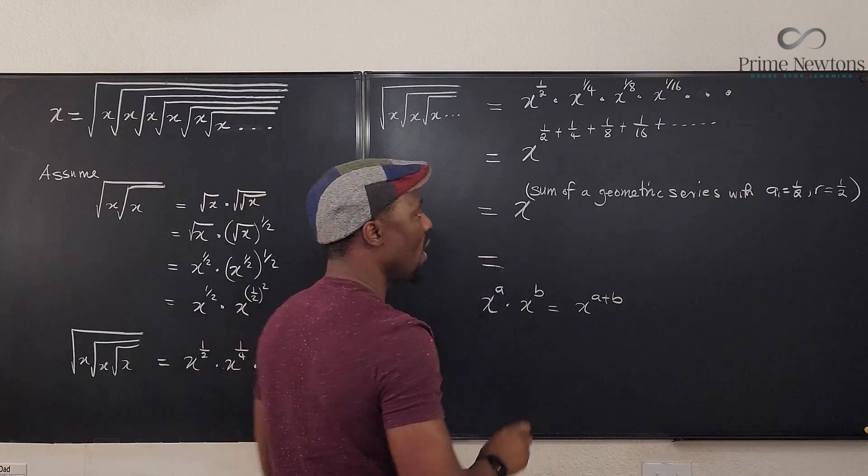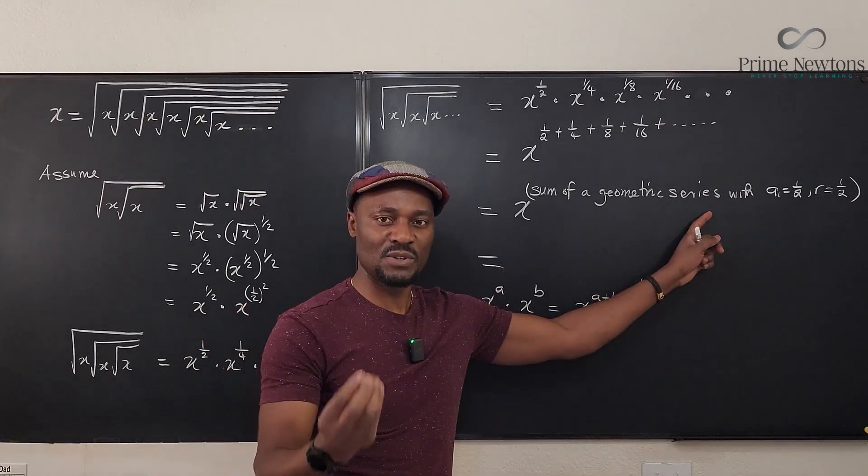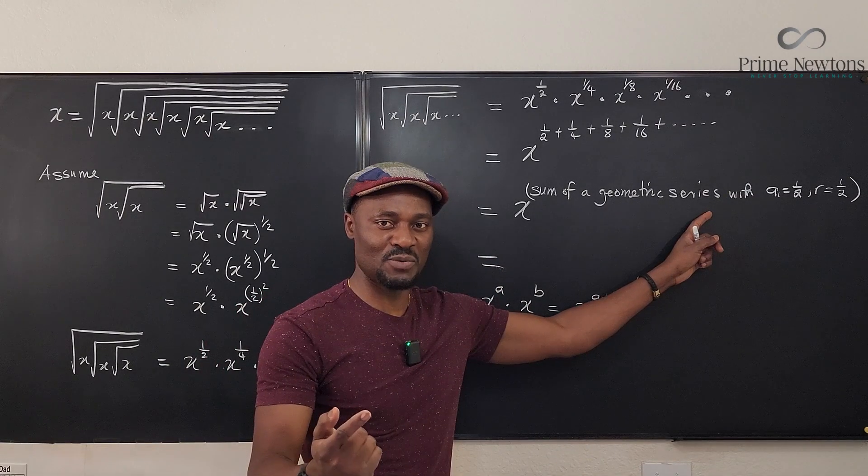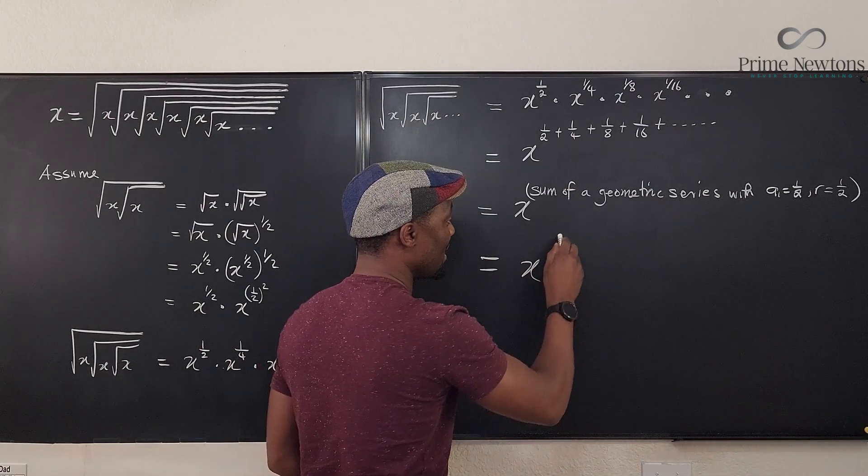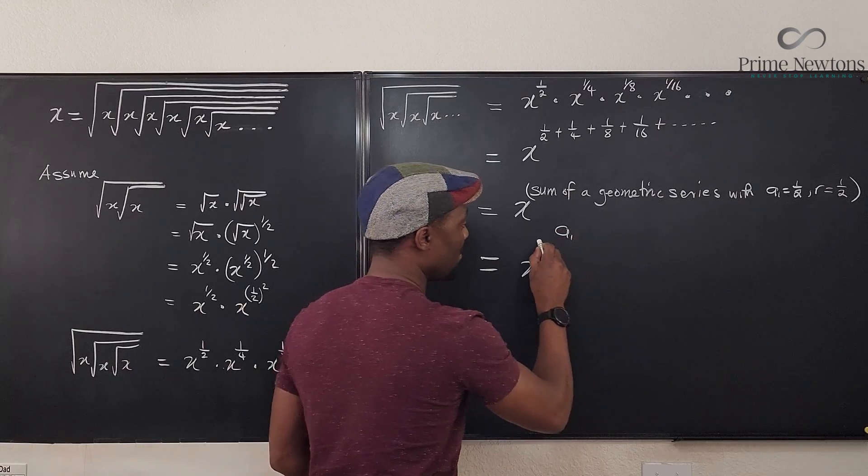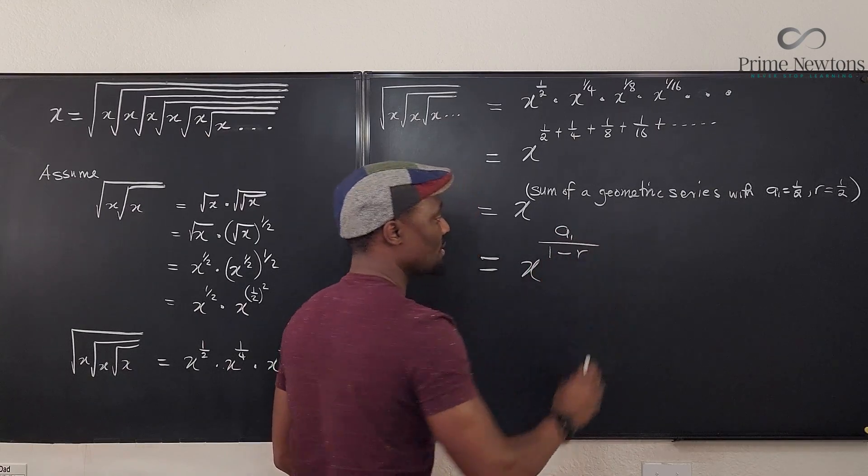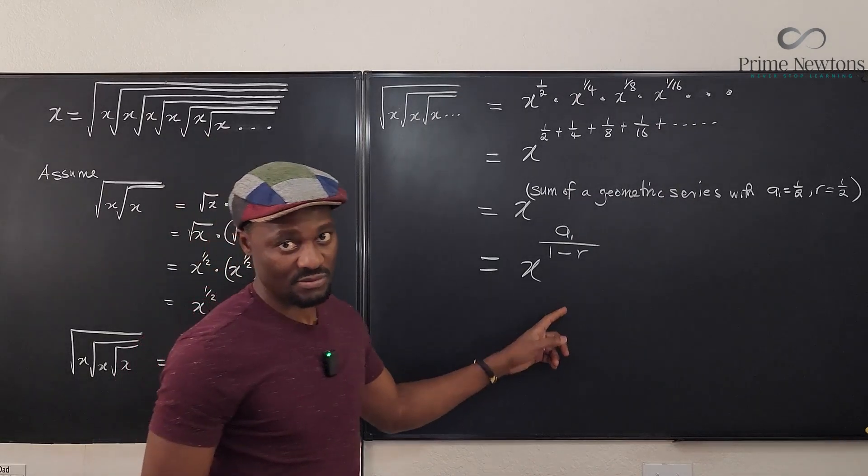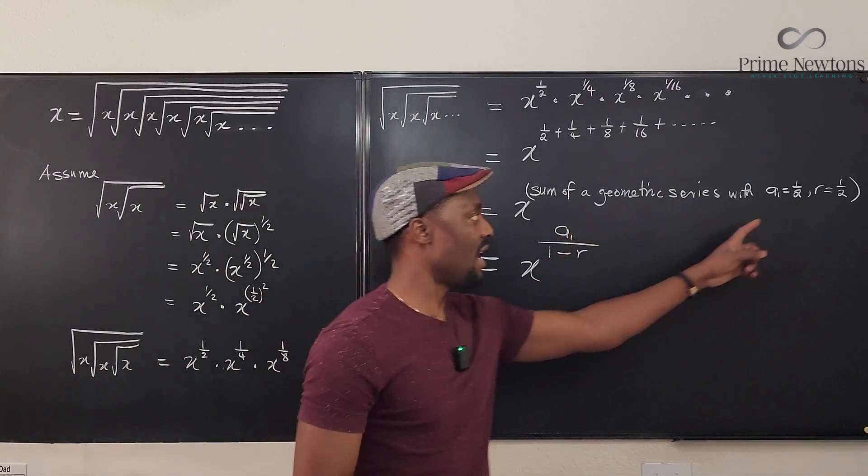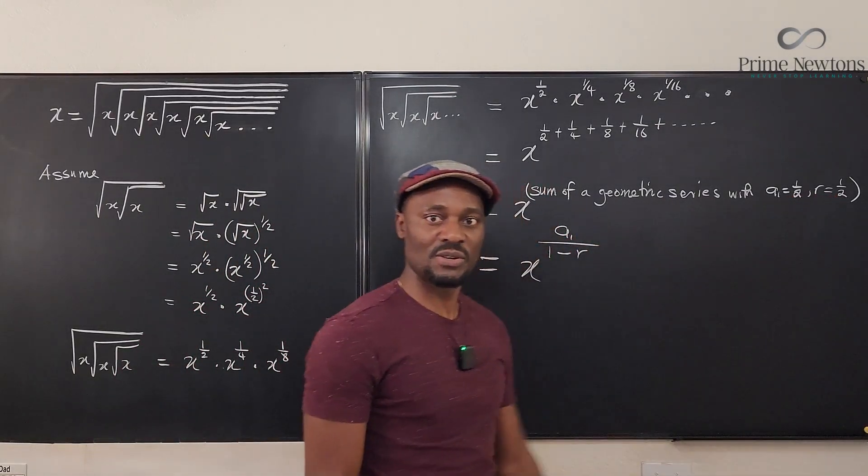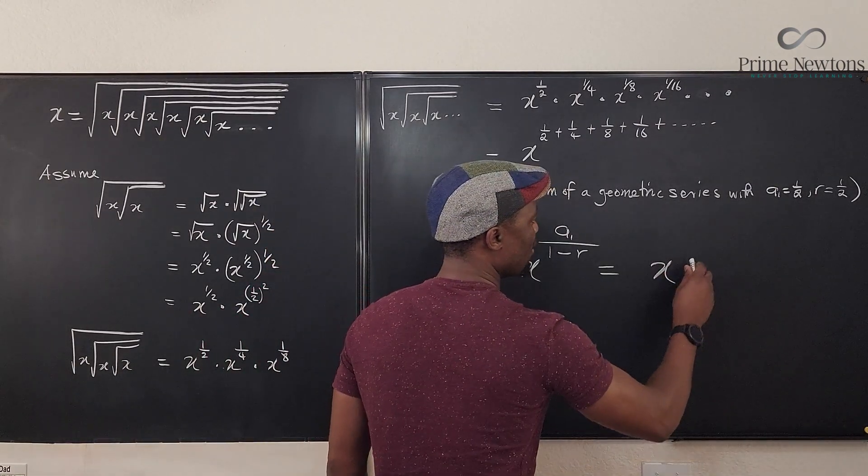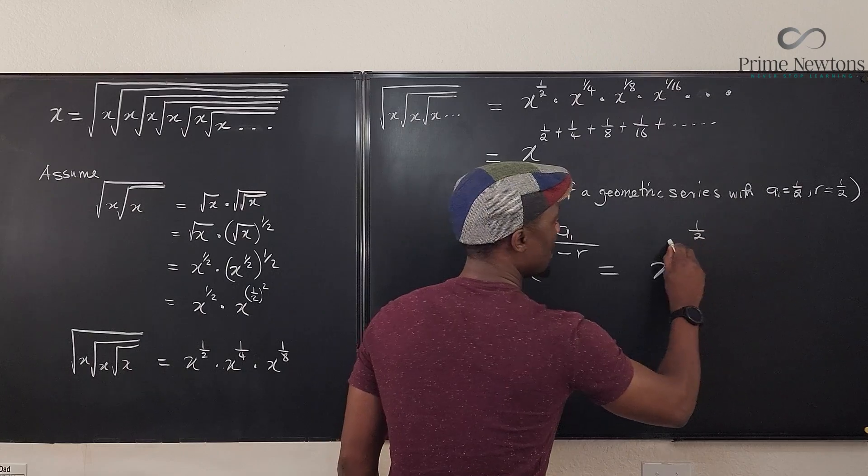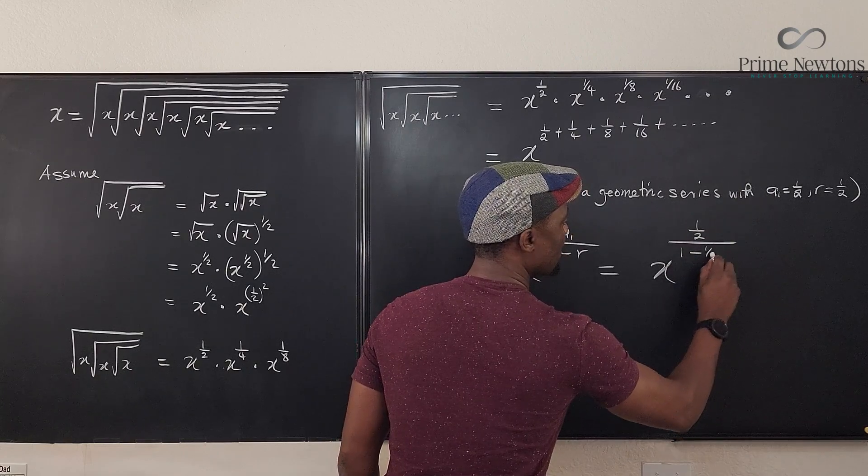Well, we know how to do this. If you're given the first term of a geometric series and the common ratio, we know the formula. So this is equal to x raised to power first term over one minus r. This you learned in algebra. In this case, our a one is one half, our common ratio is one half. Well, this is going to be equal to x raised to power one over two divided by one minus one over two.